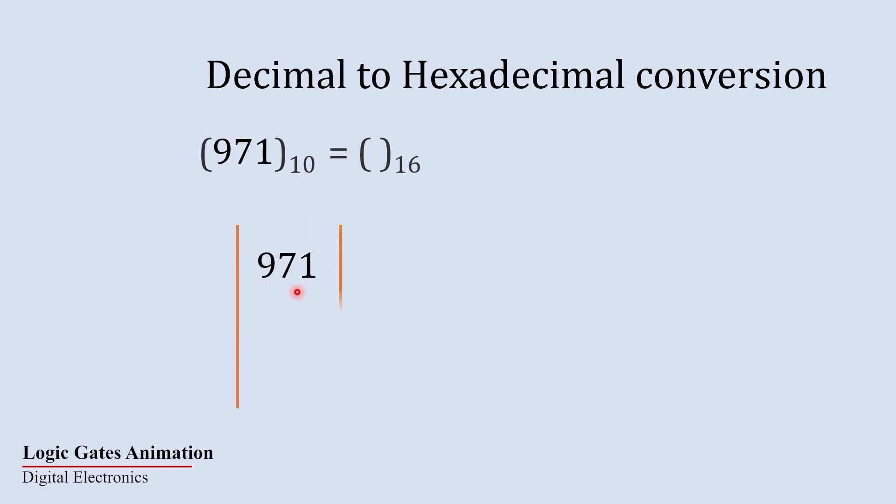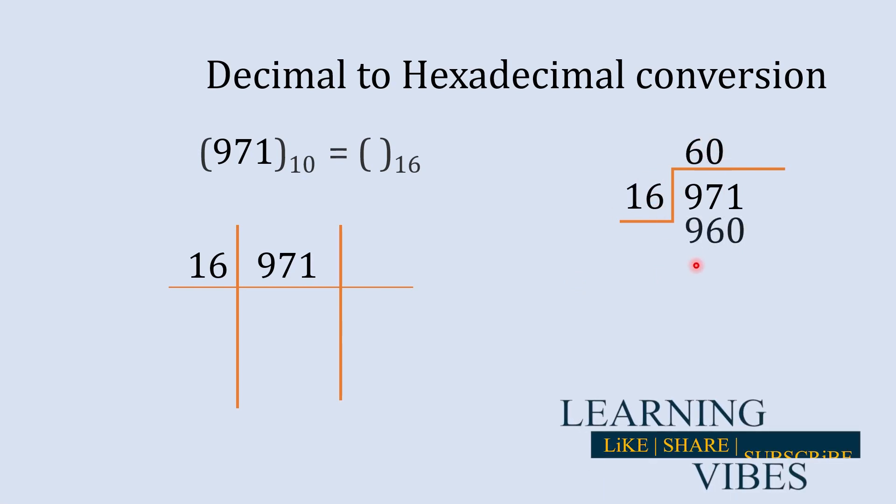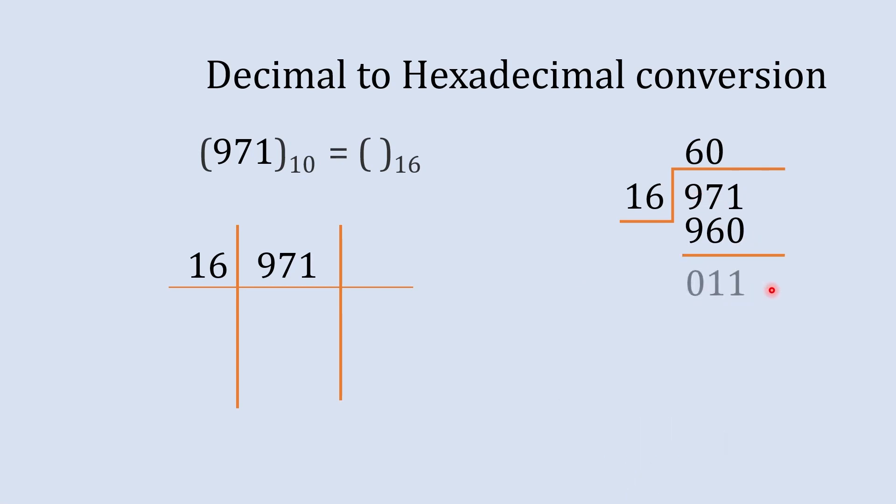So now we'll start dividing this number. We'll start dividing it with 16. So 971 divided by 16. So 60 16s are 960. So 971 minus 960 that gives us 11. So this is our remainder and this is our quotient. So we are going to write the quotient over here and 971 minus 960 gives us 11 as remainder.